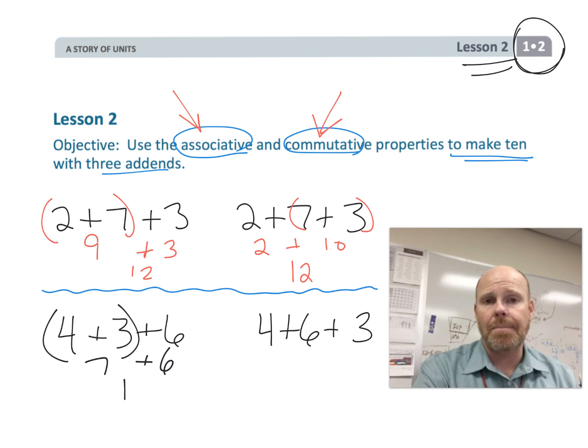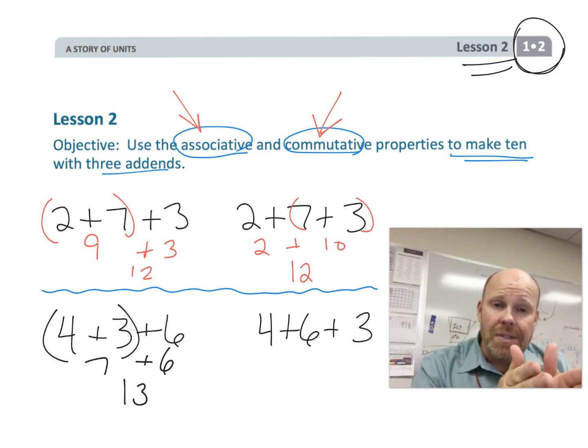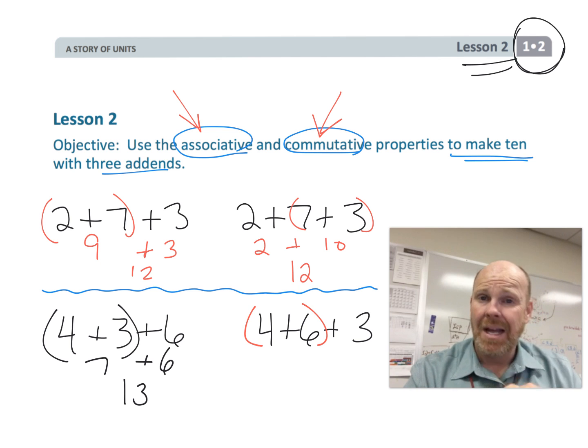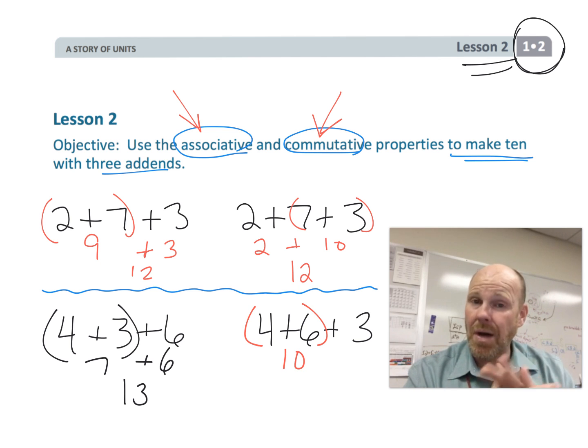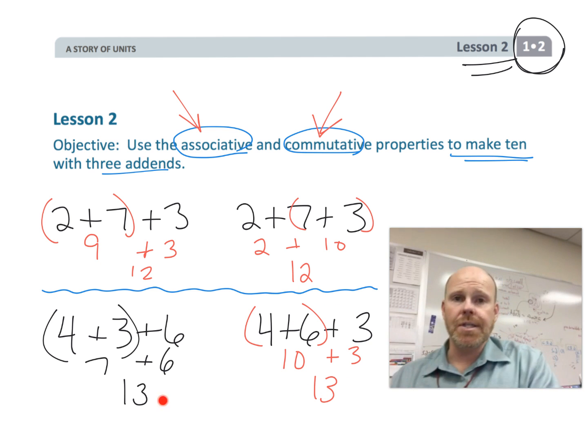But the commutative property says we are allowed to take those numbers, move them around so that the 4 and the 6 are next to each other because that's a 10 pair. 4 plus 6 is 10. We want our students to recognize number pairs that equal 10. And that's 10 plus an extra 3 is 13. Typically, we think of 4 plus 6 is 10 and then adding 3 to be easier than the first example where we are adding 4 plus 3 to get 7 and then adding on 6. So let's get practicing on this.